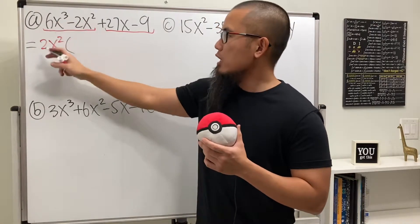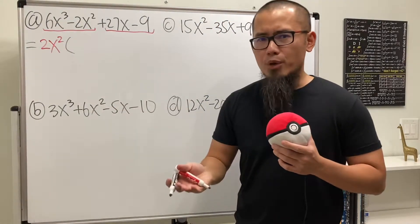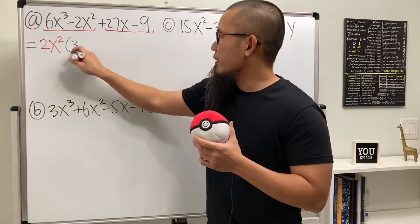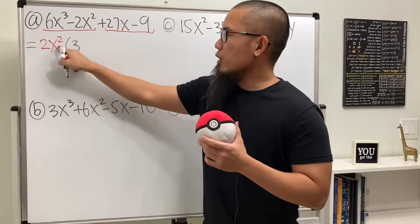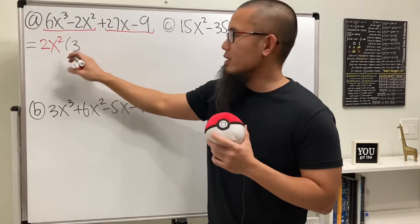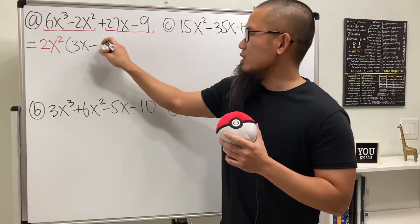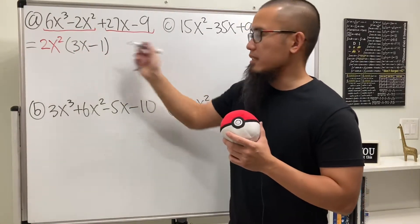And then here, originally you have 6, we took out 2. Just think about it as 6 divided by 2, which is 3. So we have 3 left. x to the third power, we took out 2 of them, so we have x to the first power. Minus, well, this is out already, but remember, we still have the 1. So 3x minus 1 inside.